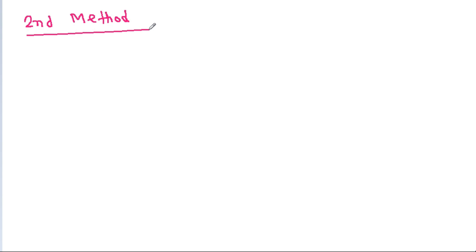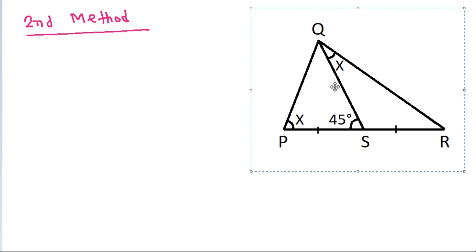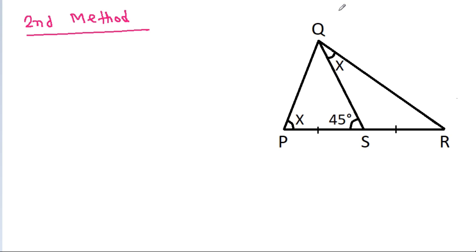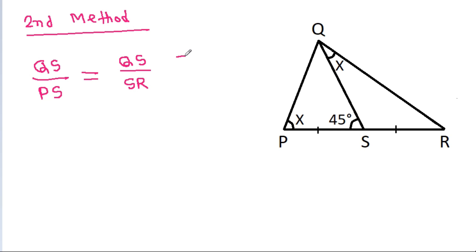Now for the second method, using the sine rule in triangle QSR. QS by PS will be equal to QS by SR, since PS is equal to SR.